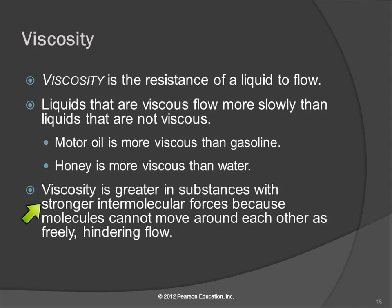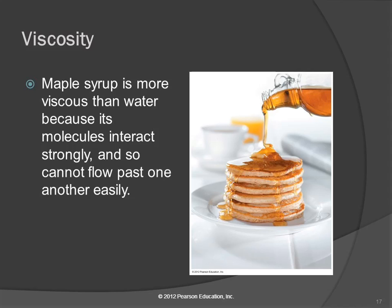Viscosity is greater in substances with stronger intermolecular forces, because the molecules cannot move around each other as freely and that hinders flow. Water is a fairly low viscosity — it flows easily. Honey flows more slowly because the molecules are stickier to each other, so they pour in slow motion. High viscosity means strong intermolecular forces. There's a picture of pancakes just to make you hungry — water would never flow like that. With things like gasoline or alcohol, the intermolecular forces are even weaker, so they flow more easily.